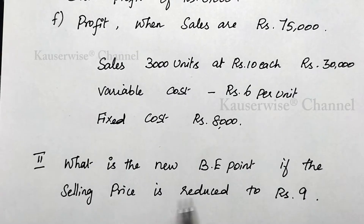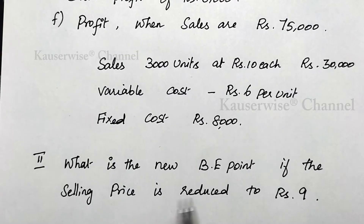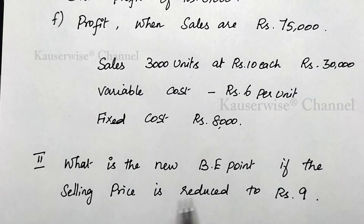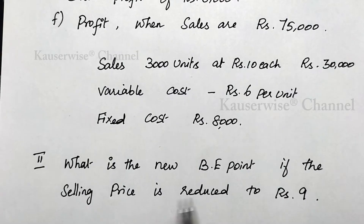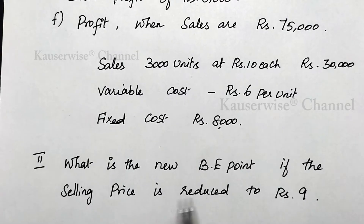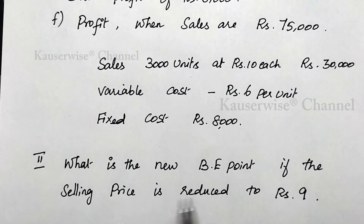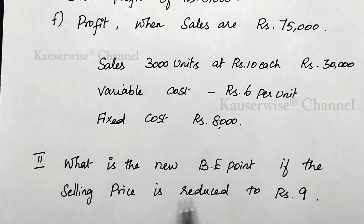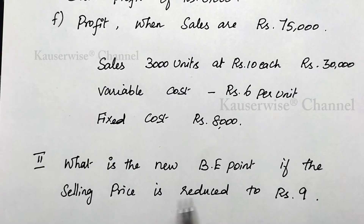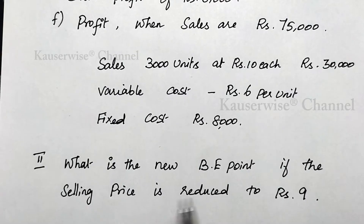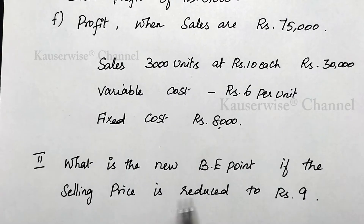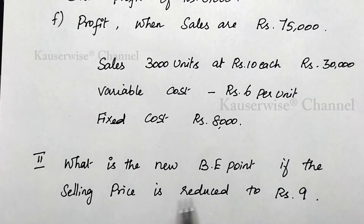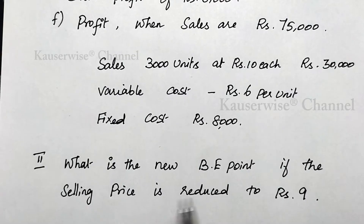Now we calculate break-even point in rupees. The formula is fixed cost divided by PV ratio. Fixed cost is Rs. 8,000 and PV ratio is 40% (calculated in step one). So: 8,000 divided by 40%, which is 8,000 divided by (40/100) = Rs. 20,000. So break-even point in rupees is Rs. 20,000.